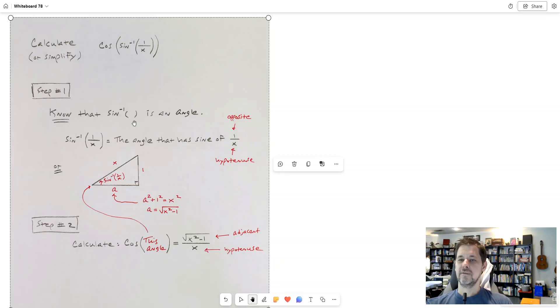So sine inverse is an angle. Now what can I tell you specifically about that angle? So here goes. This is the important part. Sine inverse of 1 over x is the angle. Remember it's an angle that has a sine of 1 over x.